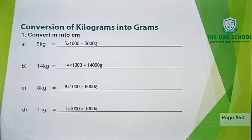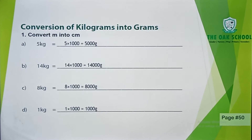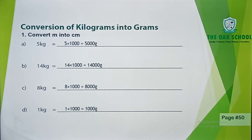After that, you have page number 50 with conversions. I explained the conversion in the last class. You have to convert kilogram into grams. First of all, you have 5 kg. 1 kg equals 1,000 grams. So you multiply 5 by 1,000, which gives you 5,000 grams.